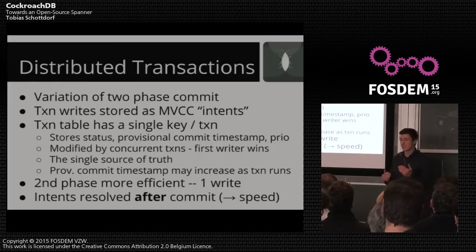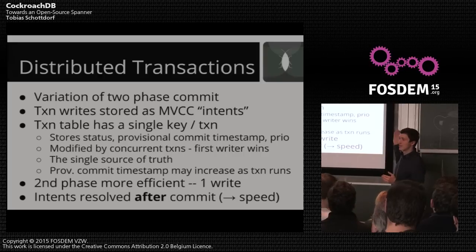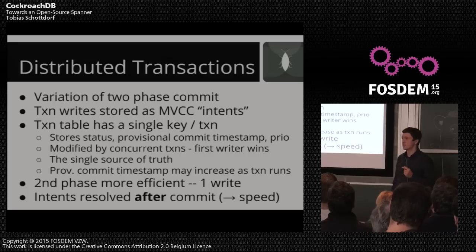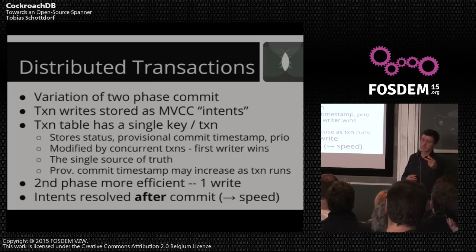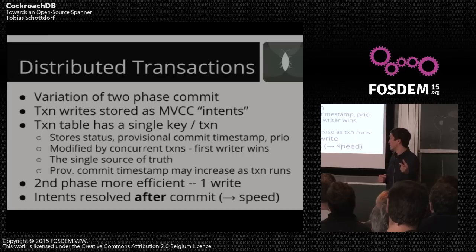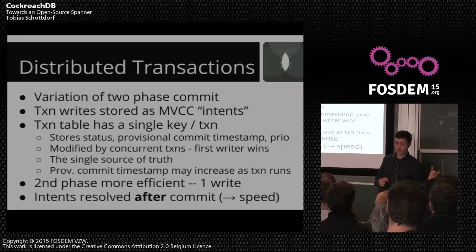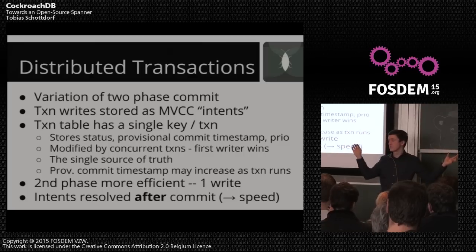Now let's look at how a transaction actually works. What we do is a variation of two-phase commit. If you are a transaction that's writing, you're not just writing values and leaving them there — you're writing values with a special flag that tells everyone else: this is a transactional value, the transaction might still be running, and here is the transaction ID. There's also a central system table that every transaction registers in, which serves as a single source of truth about which transactions exist and what values they've written as intents.